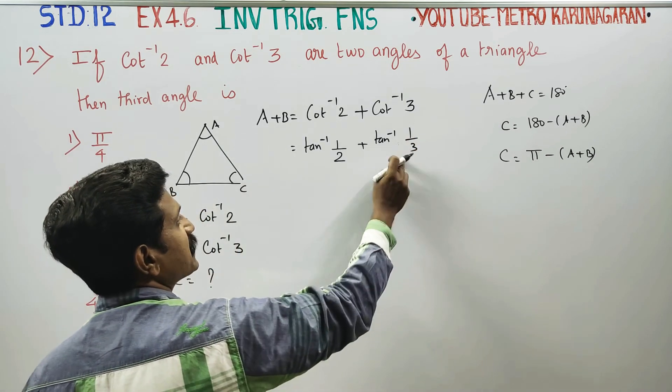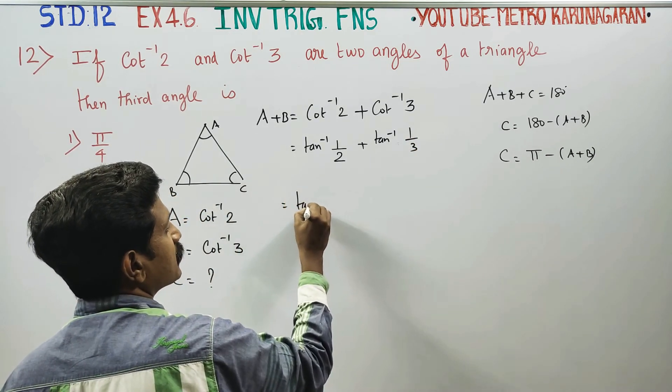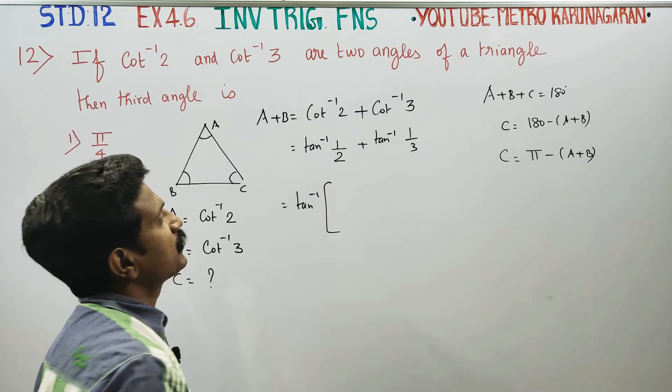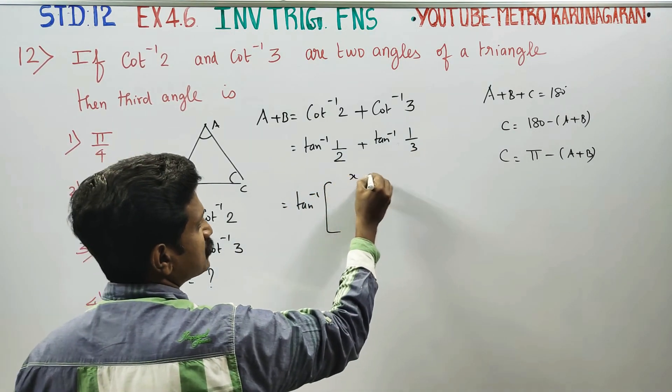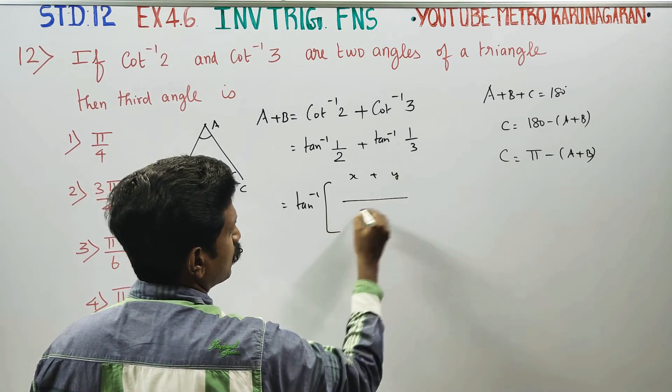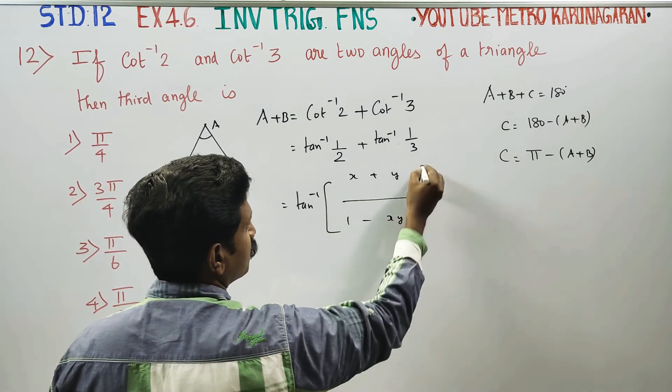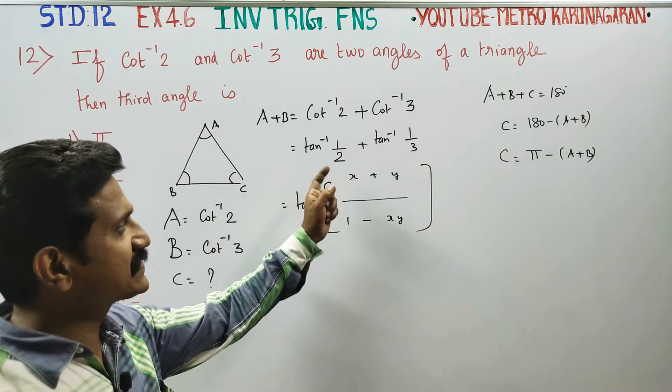Tan inverse of x plus tan inverse of y is x plus y by 1 minus xy. This is the formula for tan inverse of x plus tan inverse of y.